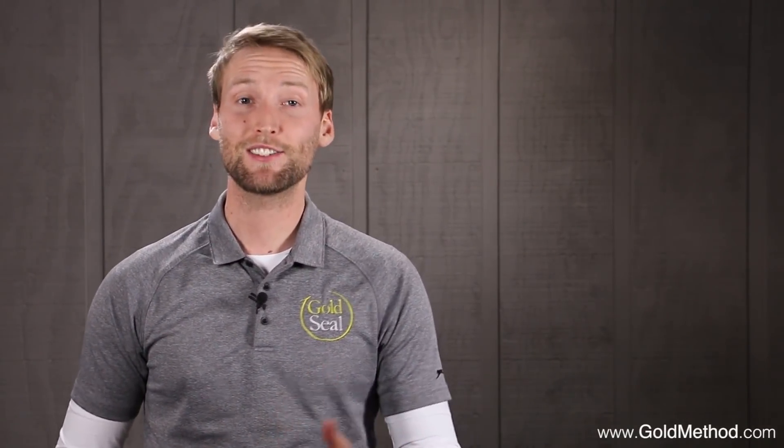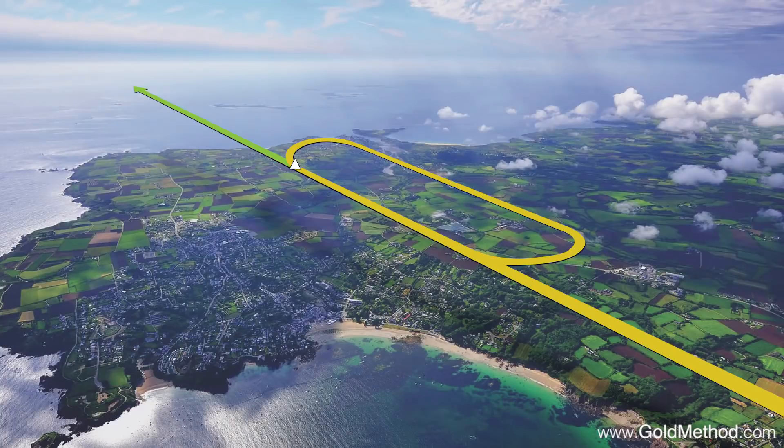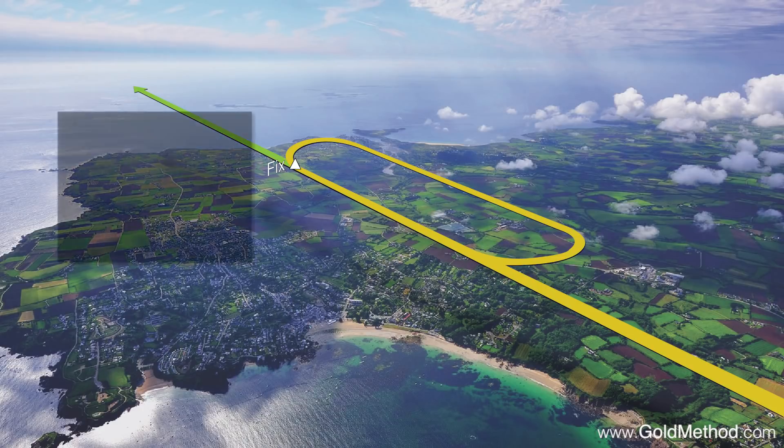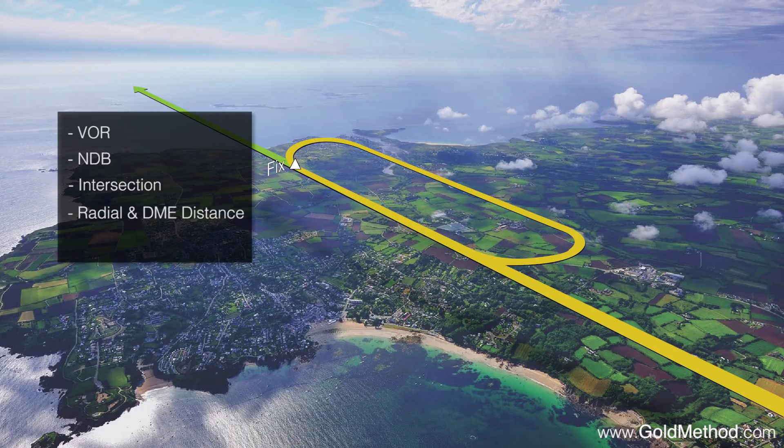A holding pattern is a racetrack-shaped oval with two straight sides connected by half circles. The hold is anchored by a fix. This fix can be anything that you can identify with navigation equipment, such as a VOR, an NDB, an intersection, a radial and DME distance, or a GPS fix.